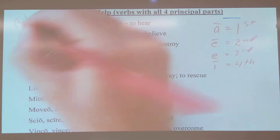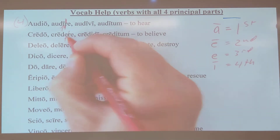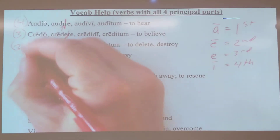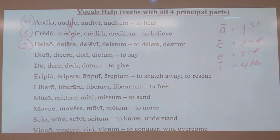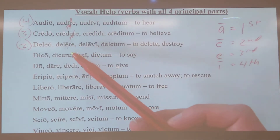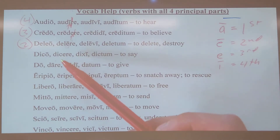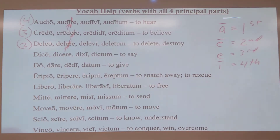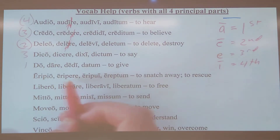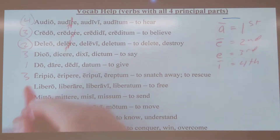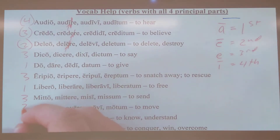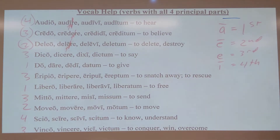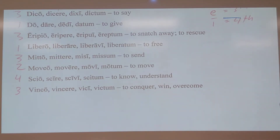Here we have a long I, so this one's fourth. Next one, credo credere — looks like a short E, so that's third. Deleo delere — chop off the RE, looks like a long E, so that one's second. I'm not going to go through each one individually; I'll just write the conjugation on the side for the rest of them. But make sure you're comfortable with this for your quiz on Wednesday. So: delere is third, dare is first, eripere is third, liberare is first, mittere is third, monere is second, scire is fourth, and vincere is third.